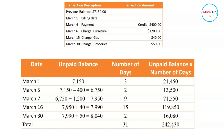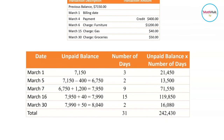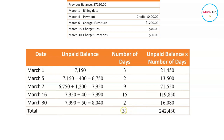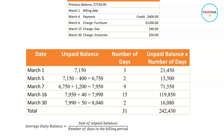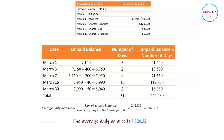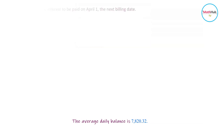The average daily balance is equal to the sum of the unpaid balances — that total of 242,430 — divided by the number of days in the billing period, which is 31 days. So 242,430 divided by 31 is equal to 7,820.32. This is the average daily balance. Next is to find the interest to be paid on April 1st, the next billing date.